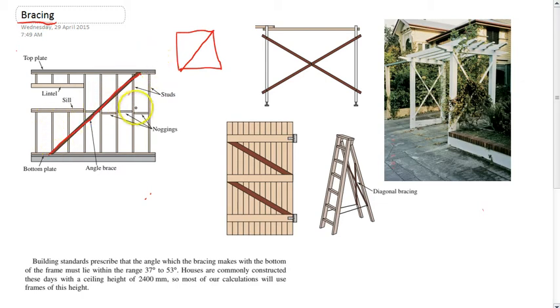You can see a bunch of examples here where diagonals are used to add strength to something. This gets used a lot particularly in wall frames. You can see this wall frame here with our studs going downwards and our window frame here and our brace down there.